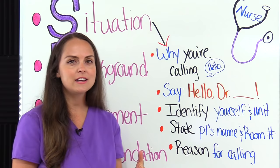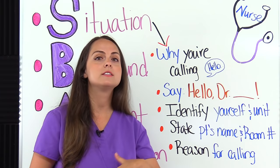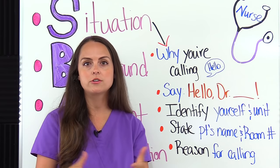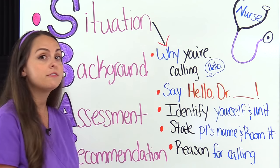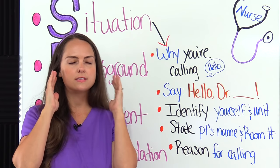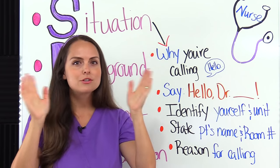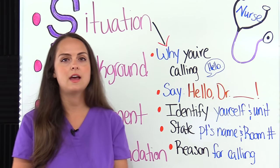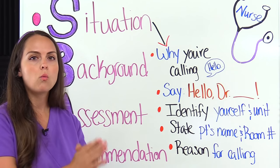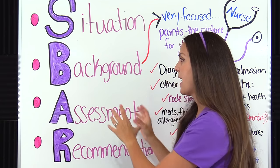To start things off, it's good to have a little introduction by saying hello to whoever you're calling. If you're calling the physician, say hello and use their name, or greet the nurse practitioner or PA. Then identify yourself and the unit that you're on so they know, for example, that it's the cardiac PCU or cardiac ICU calling. Then state the patient's name, who you're calling about, and the room number, followed by a short sentence for why you are calling. After that, go straight into the patient's background.